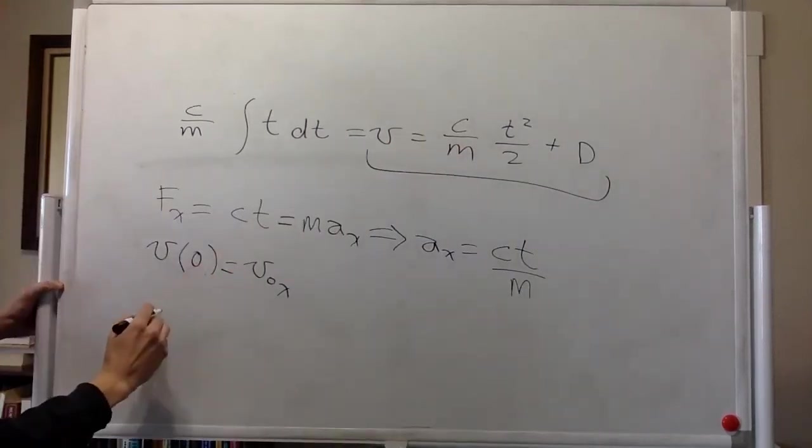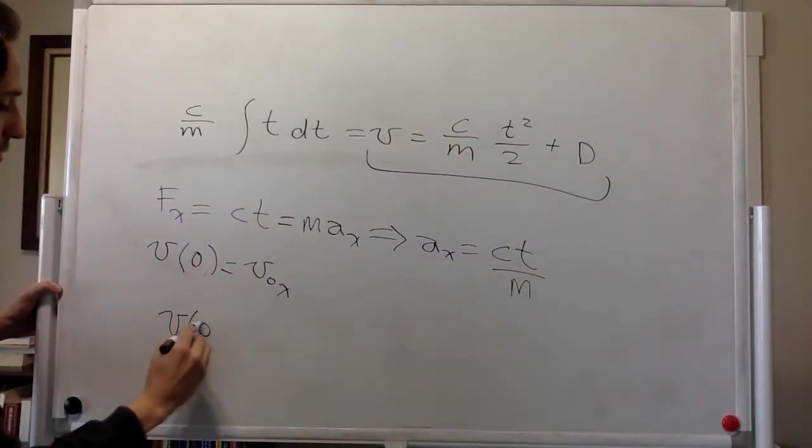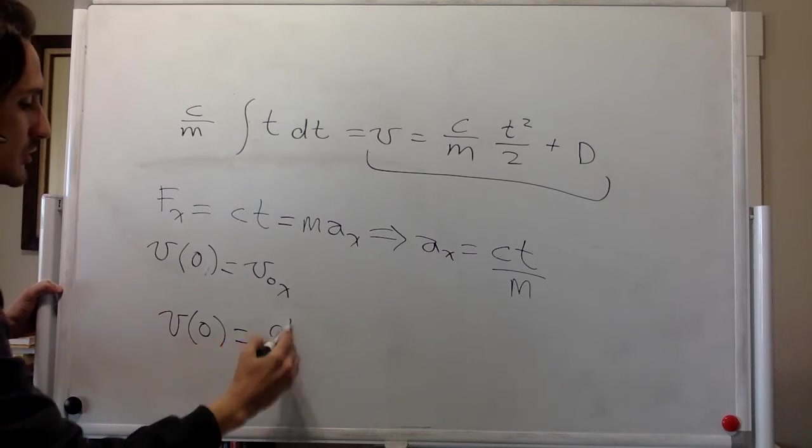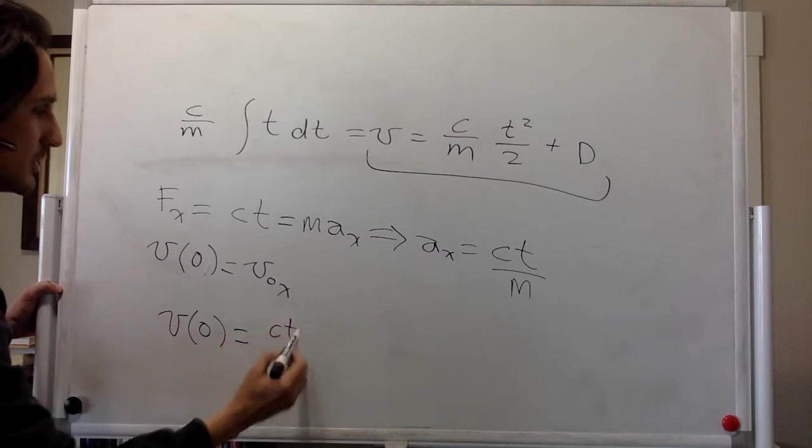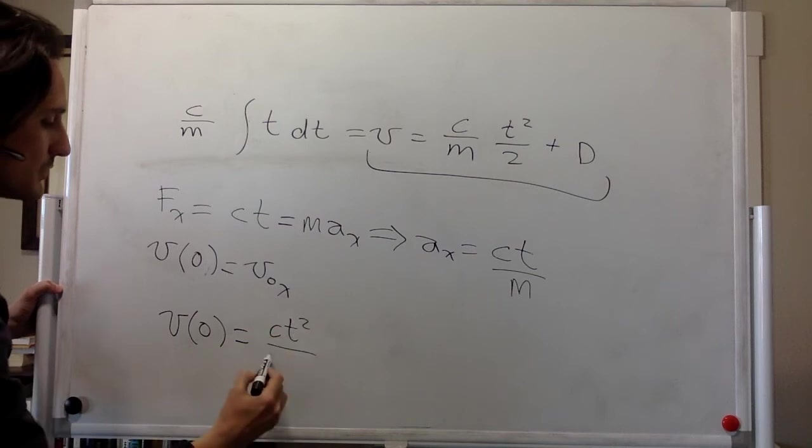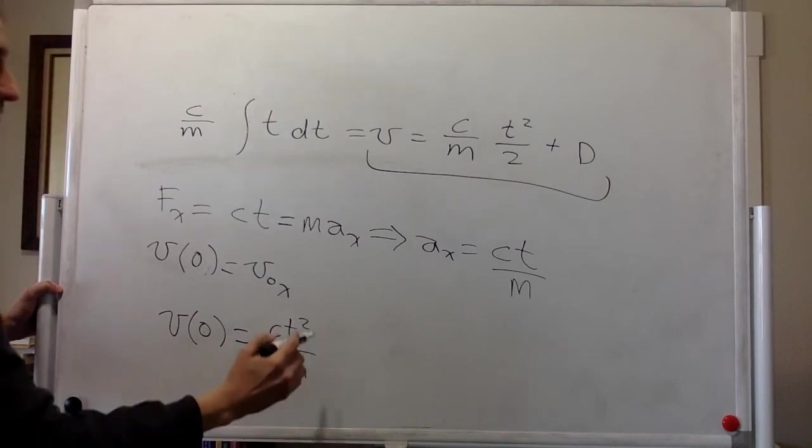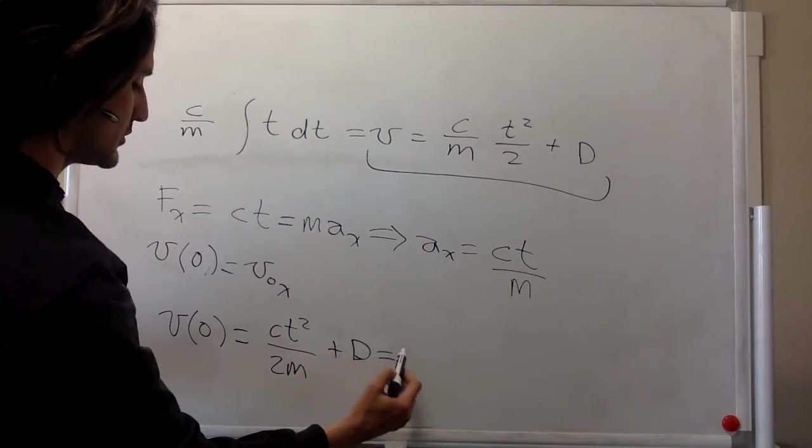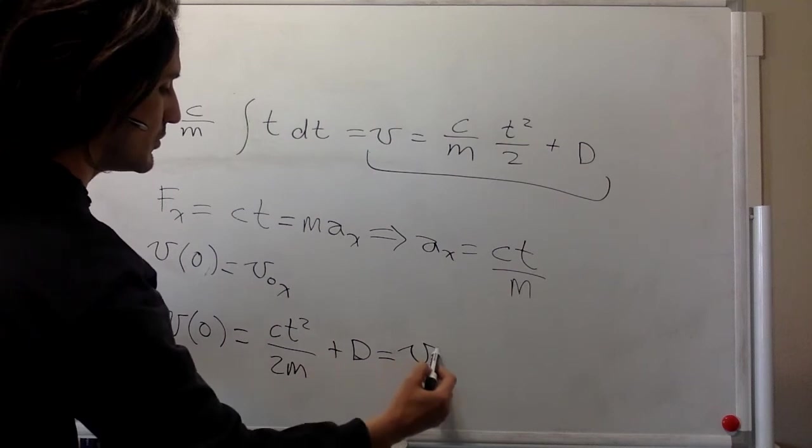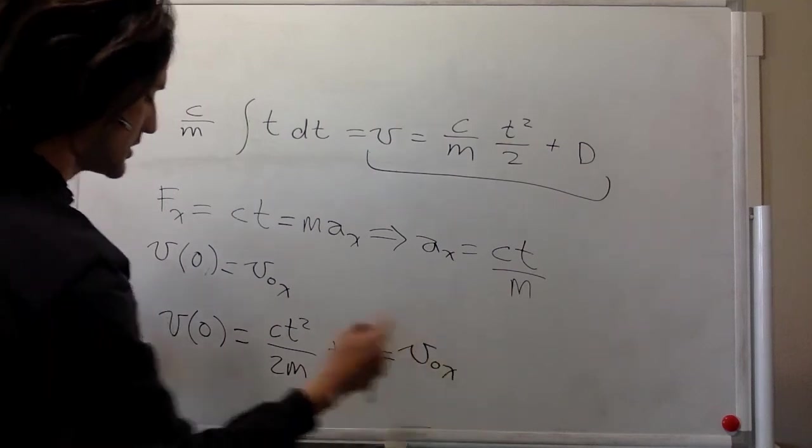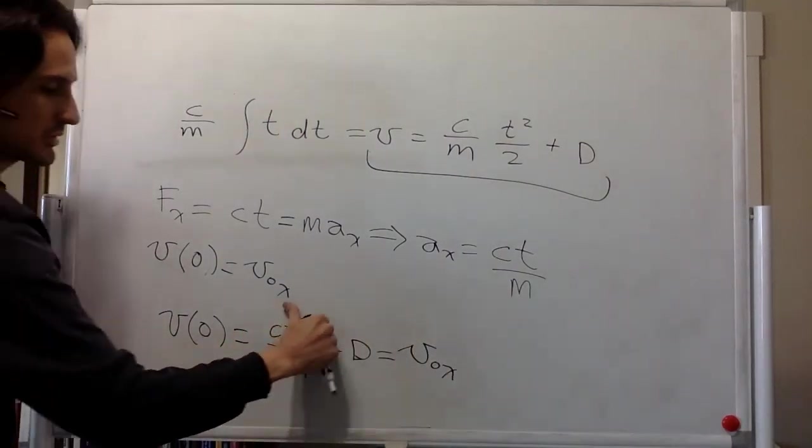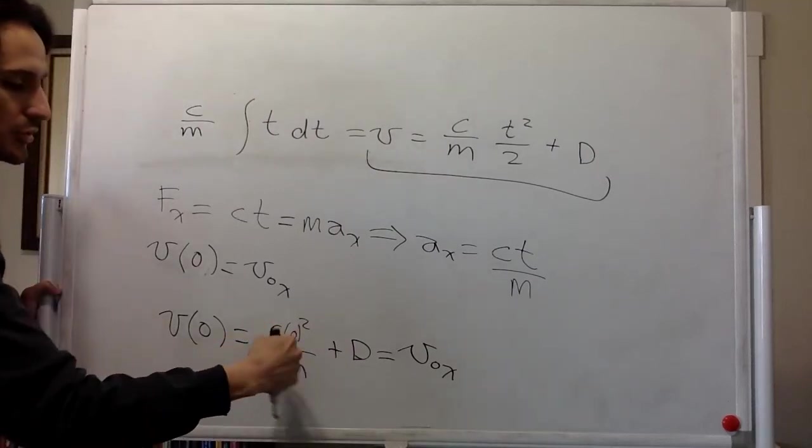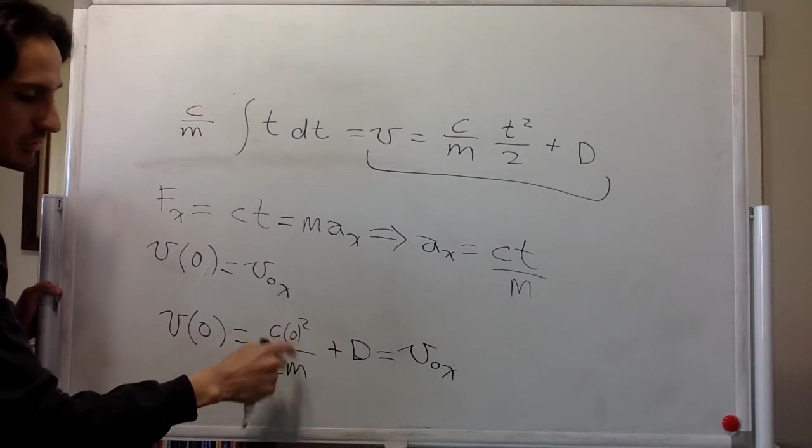And so this is the velocity. So the velocity at 0 is ct squared divided by 2m plus d. And that's equal to v naught x. The time is 0. This is 0 squared. And so this whole term is 0 because you have a 0 over here.